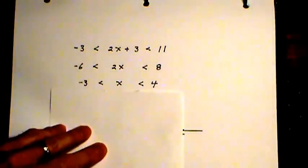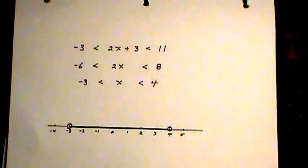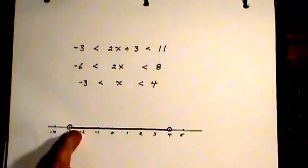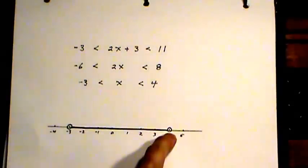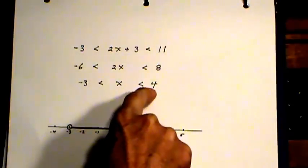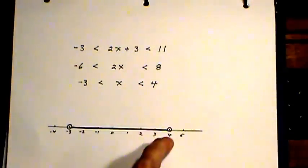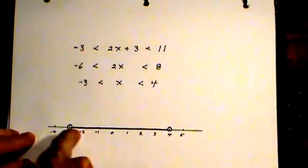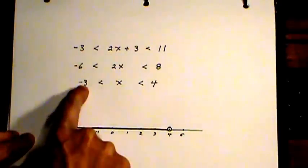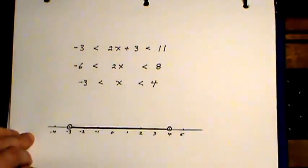I've got the x trapped between negative 3 and 4. And I just show that as a piece of the number line. Everything less than 4. See, I don't include the 4 because it's strictly less than, or the negative 3. And it's trapped. It's like it's sandwiched in between the negative 3 and the 4.